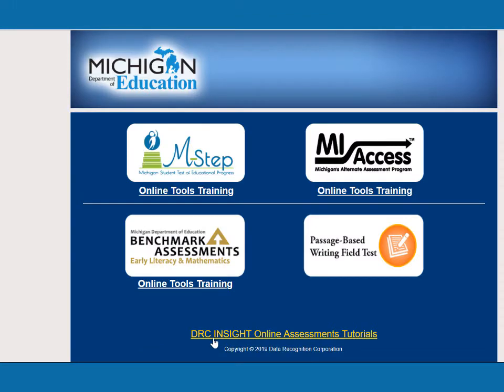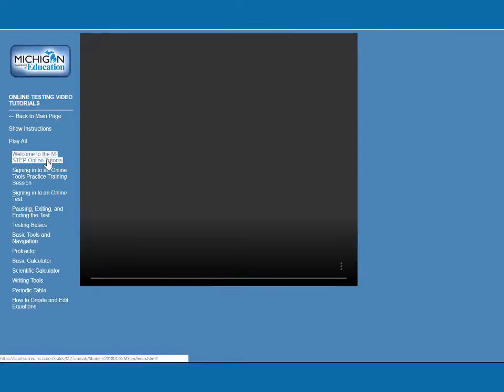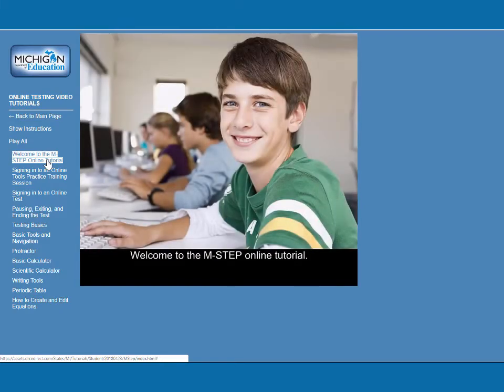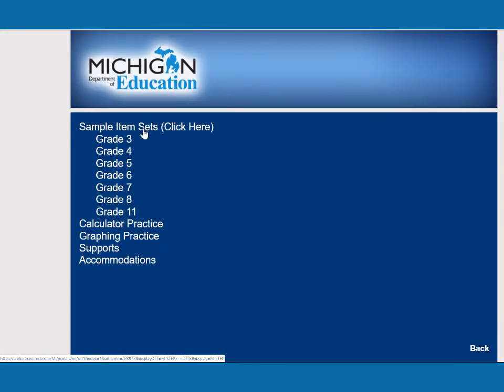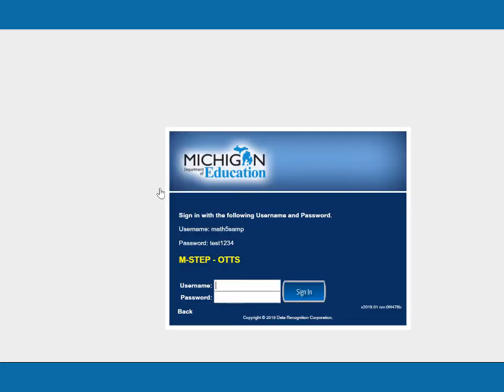The OEAA recommends that classroom teachers introduce online testing to their students by playing the student tutorial videos in class to show students how the online testing system and tools work. Once the student tutorial videos are shown and discussed in the classroom, teachers can then show the online tools training to the entire class. After students have watched the student tutorial videos and watched the teacher navigate through the OTTs using a projector or any other projecting device, each student should be provided hands-on practice with the online sample item sets contained within the OTTs, ideally using the device they will use during testing.